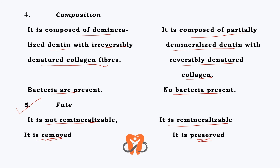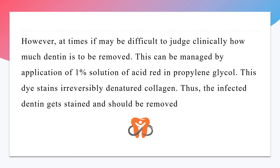During cavity preparation, when you remove the topmost layer you can feel it with the explorer. After removing the infected layer and reaching the affected layer, the texture of the dentine completely changes — it does not come off easily with the explorer or spoon excavator, and it is dark in color, so you know you have reached the affected dentine and should stop going deeper. If it is difficult to judge clinically how much dentine to remove, application of a 1% solution of acid red in propylene glycol can help — this dye stains irreversibly denatured collagen, so infected dentine gets stained and should be removed.